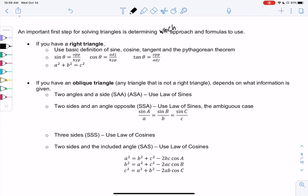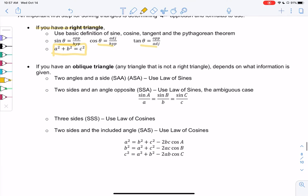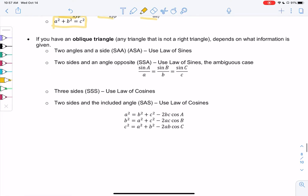So let's go back to what we started with in the early sections. If you have a right triangle, then we just want to use the basic definition of sine, cosine, tangent, and the Pythagorean theorem. So that would be our SOHCAHTOA. Sine is opposite over hypotenuse, cosine is adjacent over hypotenuse, tangent is opposite over adjacent, or even the Pythagorean theorem, a squared plus b squared equals c squared. So I think we're pretty good with right triangles by now.